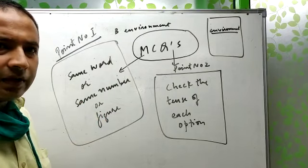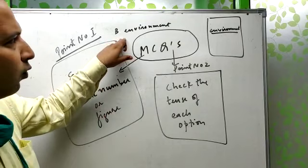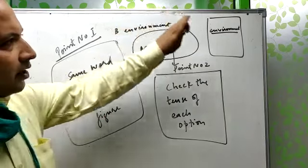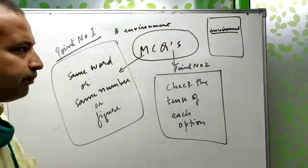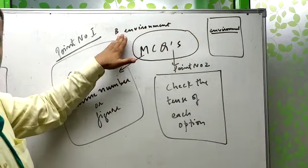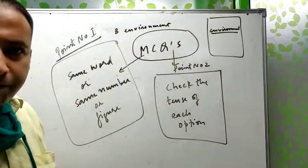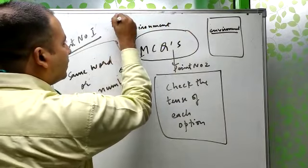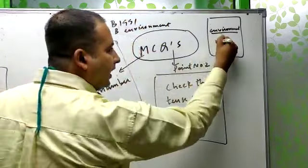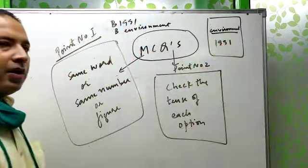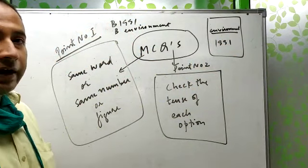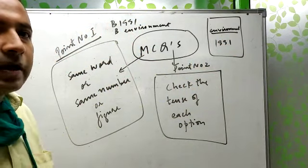Generally students think that sir, this option has environment written in it. The same word is also in the reading passage. They quickly click that as the answer. But remember this thing, same word, same number or same figure cannot become the answer. There must be a reason for that. They deliberately wrote environment. Environment is also given in option B. Environment is also given in the reading.